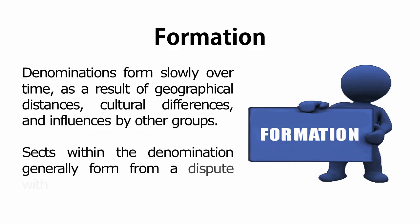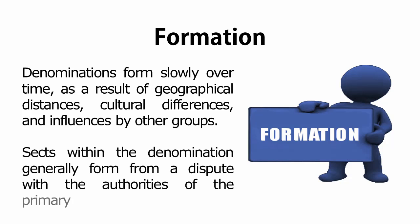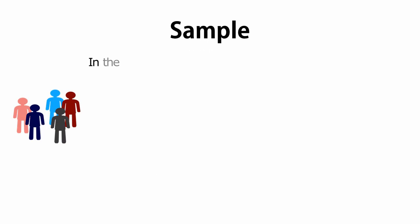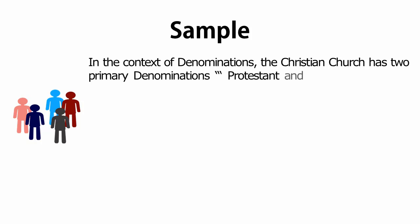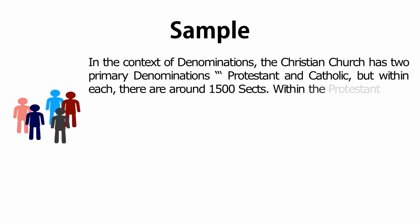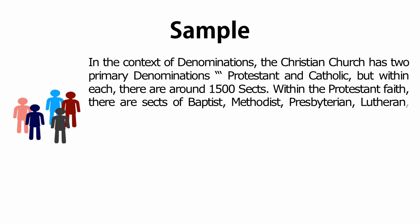Sects within the denomination generally form from a dispute with the authorities of the primary religious group's views. In the context of denominations, the Christian church has two primary denominations — Protestant and Catholic — but within each, there are around 1,500 sects.